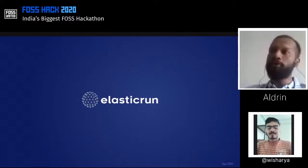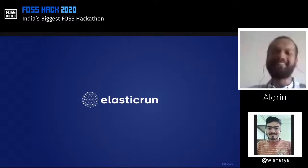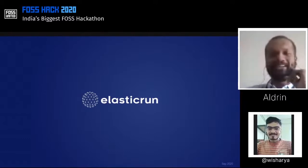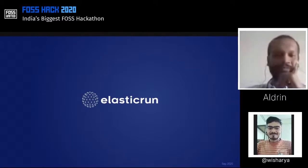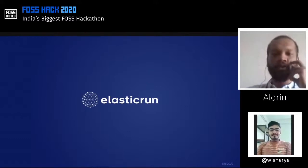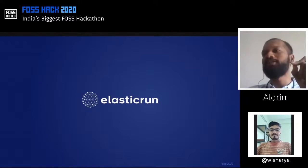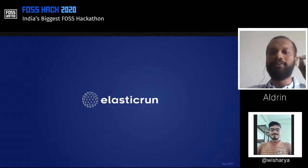Elastic Run is a four-year young company — a startup, maybe not a startup anymore. We have actually graduated from a startup to be a disruptor in the Indian supply chain landscape. We were established back in 2016 and the only goal we had was to transform the entire logistics space. Our organization is a one-of-a-kind organization. We are transforming multiple industries across India, purely with technology-backed operations.